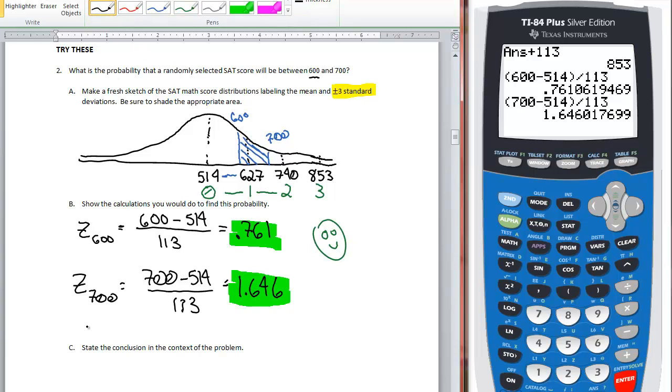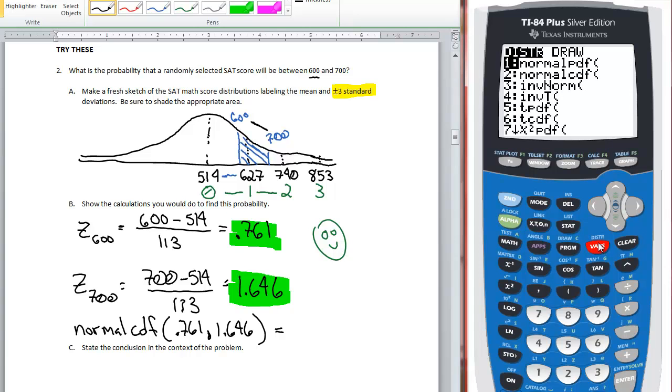Now the last thing that we want to do is we need to put these into our normal CDF function with .761 going first, our comma, and then a 1.646 going second and then closing our parentheses. And that's going to give us the area, the probability, underneath the curve between these two values, between those two values right there. So again, where is it? Second, vars, 2 for normal CDF. I'm going to put in .761. If yours looks like this, you can put the comma in, 1.646.